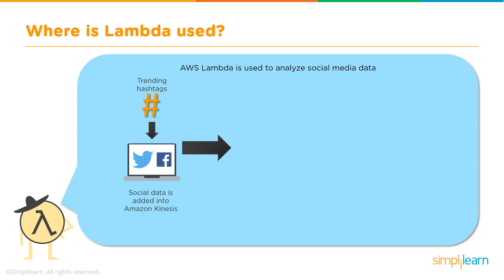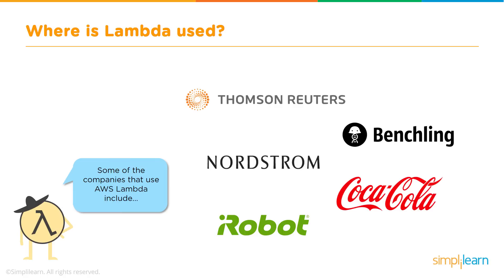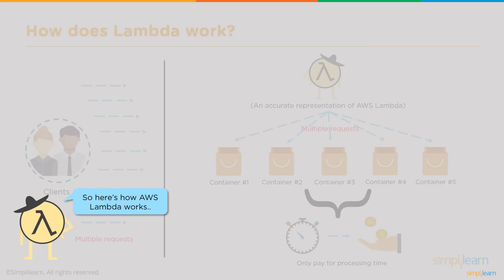Another use case is analyzing social media data. For example, collecting hashtag trending data — that data is received and added into a Kinesis stream to feed into the Amazon environment. A Lambda action gets triggered, receives the data, and stores it into a database for later business analysis. Companies that have received tremendous benefit from Lambda include Thomson Reuters, Benchling, Nordstrom, Coca-Cola, and iRobot.